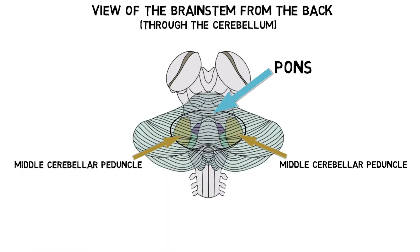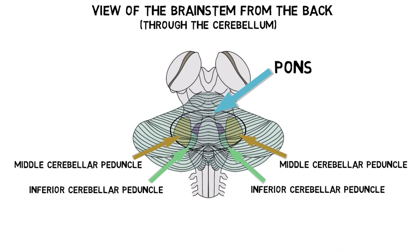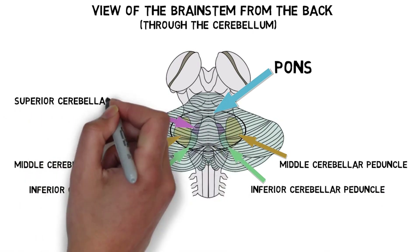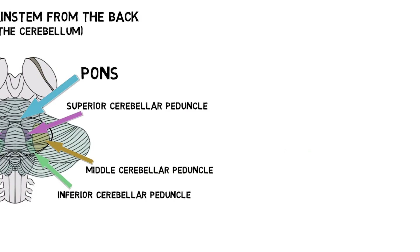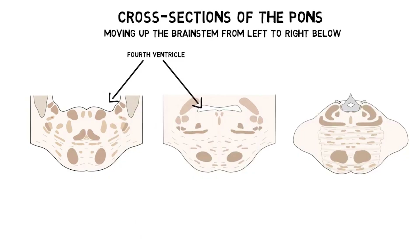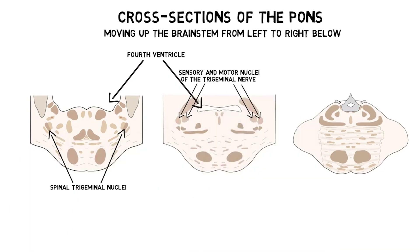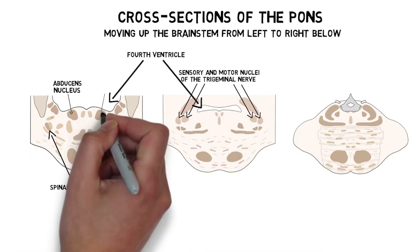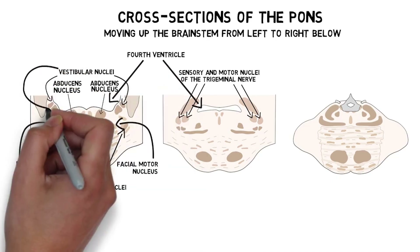The inferior cerebellar peduncles also travel through the pons to carry information to the cerebellum, and the superior cerebellar peduncles enter the brainstem at the level of the pons and carry information from the cerebellum to the brainstem. The pons forms most of the floor of the fourth ventricle and is home to several cranial nerve nuclei, including the trigeminal nuclei, which are involved with sensory and motor functions of the head and face; the abducens nucleus, which controls lateral movements of the eye; the facial motor nucleus, which controls muscles of facial expression; and the vestibular nuclei, which process vestibular information.